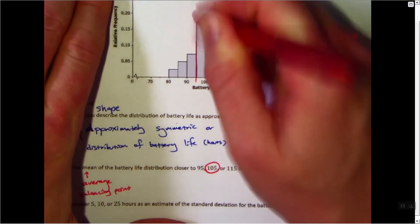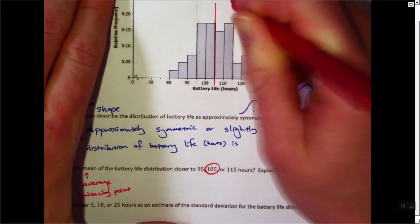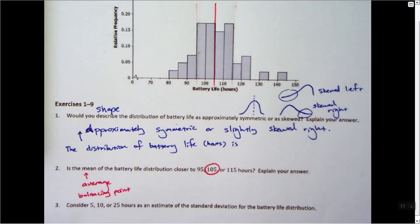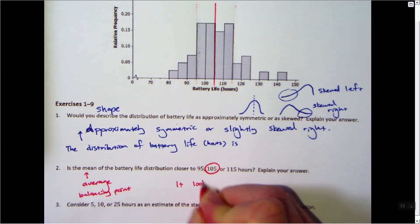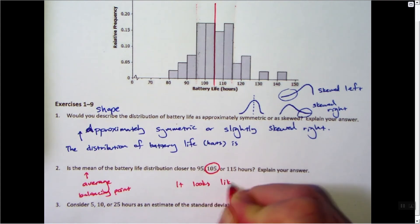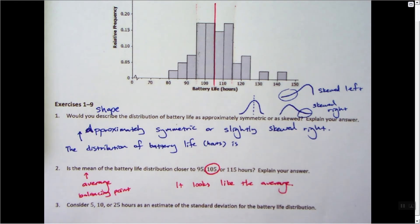So I'm going to erase these two and kind of stick with 105. 105 hours is probably the mean, the average, the average duration of the sample. It looks like the average. That's my answer.